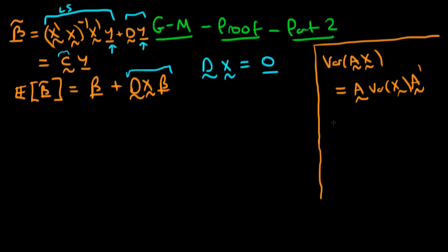Another result we'll use is that for a product of two matrices AB, the transpose is equal to B transposed times A transposed. So when applying the transpose operator to a product, the order of multiplication is reversed.